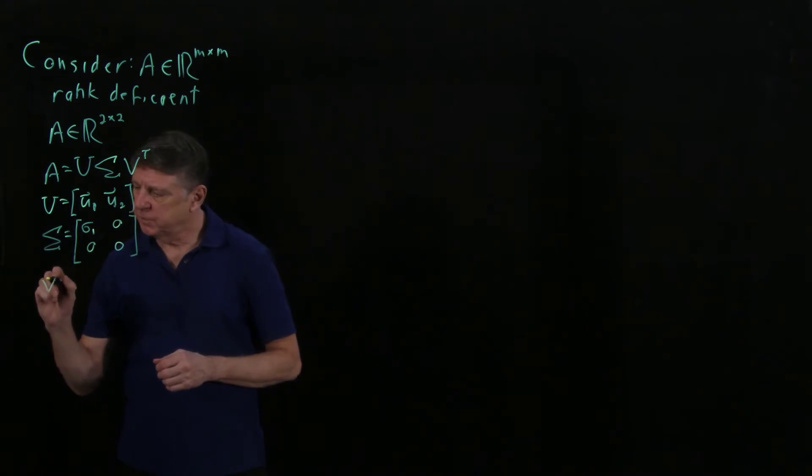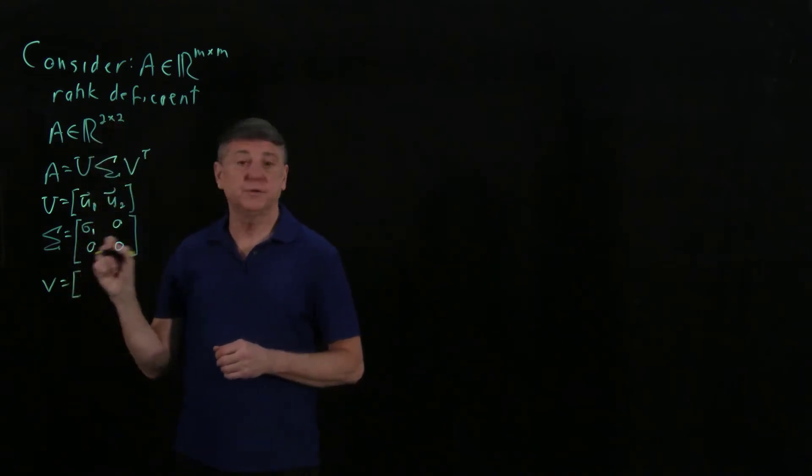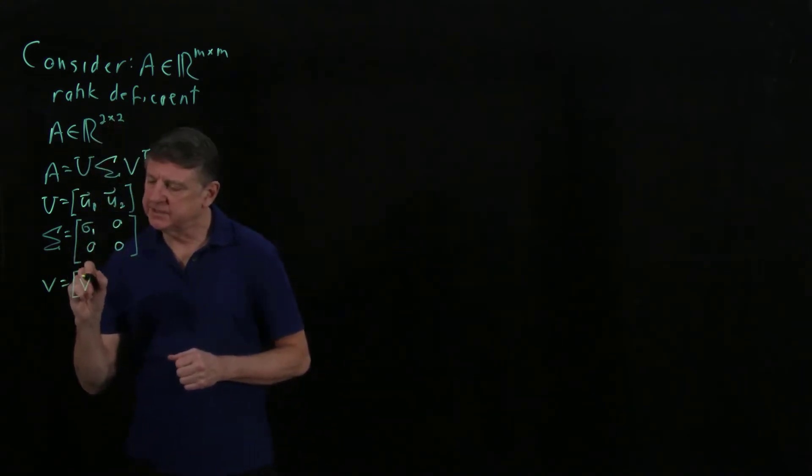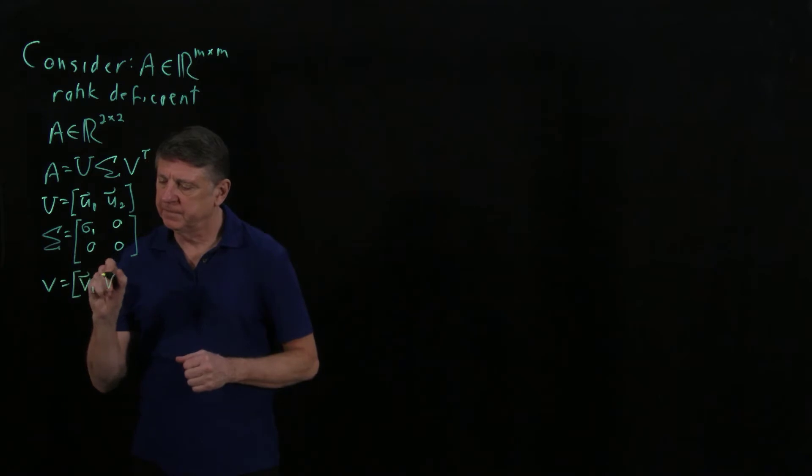Now, here's where we have to take care. Let's suppose that V is, if there are two columns, V is 2 by 2, and let's write this as V1, V2.